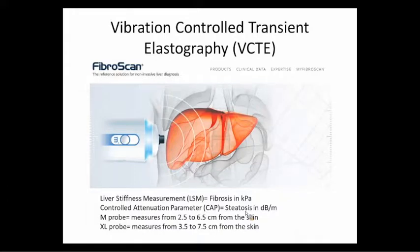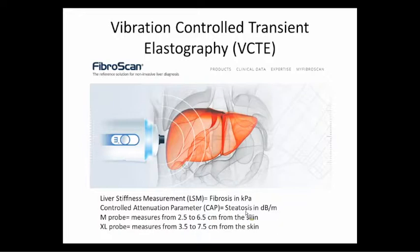Vibration-controlled transient elastography — the FibroScan. As the joke goes, the French developed this to figure out if cheese was done in the center, then started using it on livers. We do this in the clinic; it takes less than five minutes and outputs scores immediately. The FibroScan spits out two scores: the liver stiffness measurement for fibrosis staging (to determine if a patient is F0/F1 or has cirrhosis), and a steatosis CAP score to see if fatty liver is the etiology. We have two separate probes — the M probe looks at 2.5 to 6.5 centimeters below the skin. Because of obesity in the United States, the French also developed the XL probe — they jokingly call it the 'American probe' — which looks another centimeter deeper for accuracy when there's excess subcutaneous tissue.